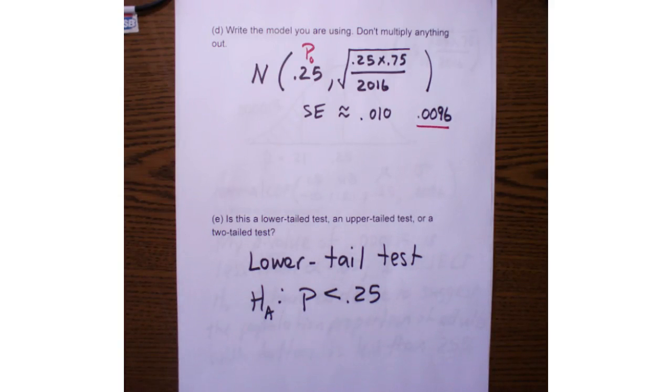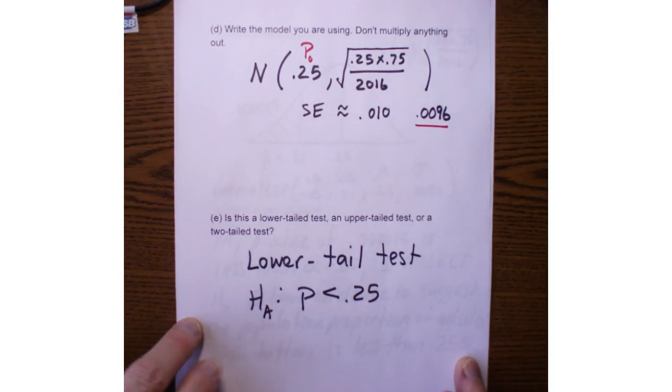Since my alternate hypothesis is a population proportion less than 0.25, that is a lower tailed test. Because I'm looking in the lower tail, I'm looking less than something, and that's a lower tailed test.